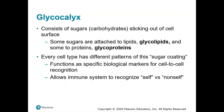The glycocalyx consists of sugars or carbohydrates sticking out of the cell surface — like a sugary coat that covers the cell. Some of these sugars are attached to lipids, called glycolipids, and some are attached to proteins, called glycoproteins. It allows the immune system to recognize self versus non-self, which is very important when we talk about the immune system.